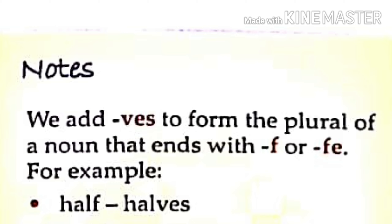Rule number two: we can add 'ves' to form the plural of a noun that ends with f or fe. It means that if a singular noun ends with f or fe, we will add 'ves' to the end of it. That means, the word half ends with f, so we will remove the letter f and add 'ves' at the end, so the word will become halves. From half to halves to make it plural. Another example is the word leaf — if we remove f from leaf, we will add 'ves' to it and the word will become leaves. From leaf to leaves to make it plural.